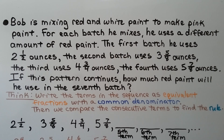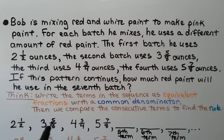Bob is mixing red and white paint to make pink paint. For each batch he mixes, he uses a different amount of red paint. In the first batch, he uses two and a half ounces; the second, three and five eighths ounces; the third, four and three fourths ounces; the fourth, five and seven eighths ounces. If this pattern continues, how much red paint will he use in the seventh batch? We write the terms as equivalent fractions with a common denominator.